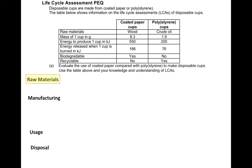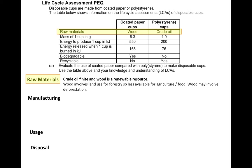Starting with raw materials — I've highlighted the relevant row in the table. For the coated paper, the raw material is wood, and for polystyrene it's crude oil. In my answer I want to state that crude oil is a finite resource whereas wood is renewable and sustainable. I could also mention that wood involves land use for forestry, potentially taking land away from agriculture, and may involve deforestation to obtain that raw material.